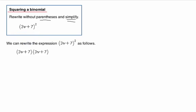What we need to recognize is that we can rewrite this as two binomials. That's the same thing as 3v plus 7 times 3v plus 7, and that leads us to the FOIL method.